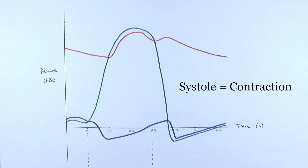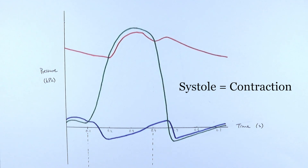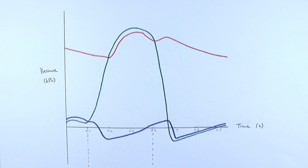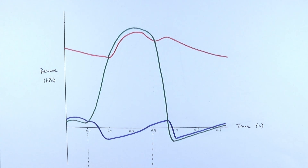We could have atrial systole, which means the atria are contracting to push blood from the atria into the ventricles, or we could have ventricular systole, where the ventricles are contracting to push the blood out of the heart to go to the lungs or around the body. We would never have a situation where the whole heart is undergoing systole, because the blood wouldn't be able to go anywhere, but we would have whole heart diastole.